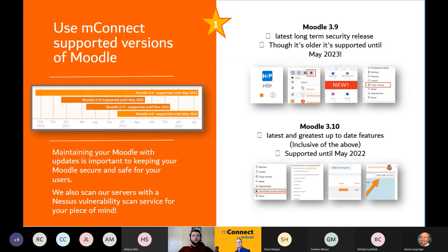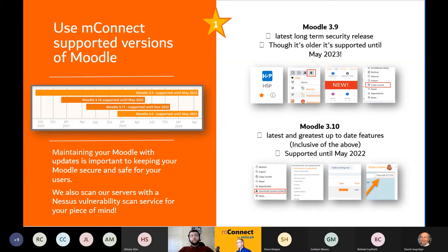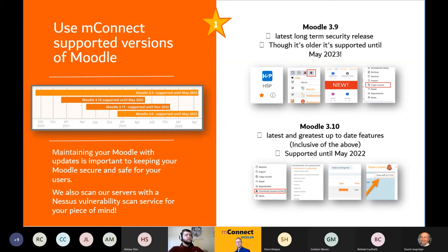The first tip is to use an mConnect-supported version of Moodle. As you can see in the image below the title, those are the latest supported versions and their end-of-life dates. Moodle 3.8 and 3.5 are not included because both are end of life as of next month. So 3.9 and onwards are the latest supported versions, with 3.9 being the long-term security release, meaning it'll be supported for much longer. Keeping an up-to-date version of Moodle is important to maintain security and keep your Moodle safe for all users.